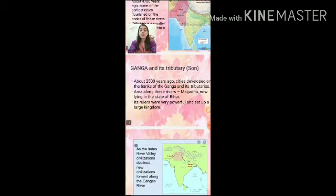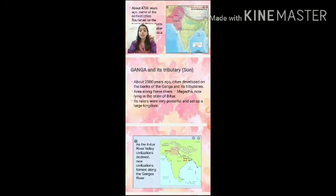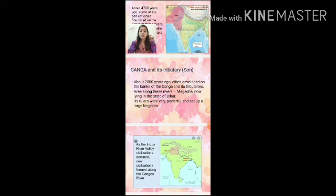Next, River Ganga and its tributaries. About 2,500 years ago, cities developed on the banks of the Ganga and its tributaries. The first cities were established along the River Narmada, then around 4,700 years ago cities were established along the River Indus, and after that, around 2,500 years ago, cities developed on the banks of the Ganga and its tributaries. The area along River Ganga, known as Magad, became a very powerful kingdom.